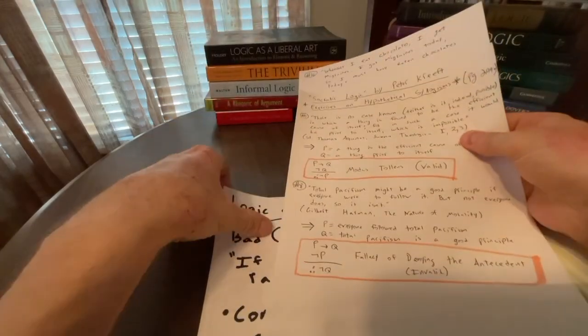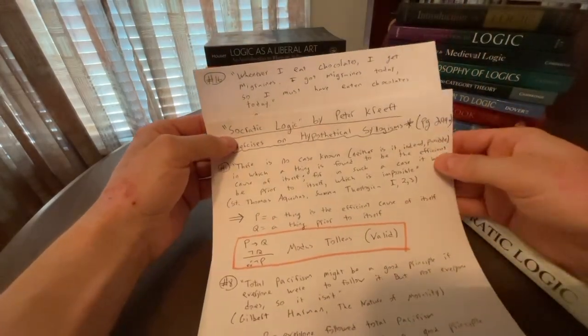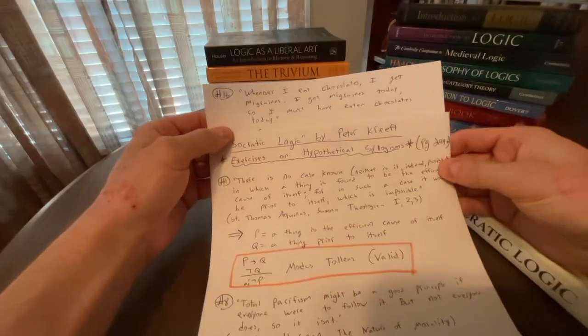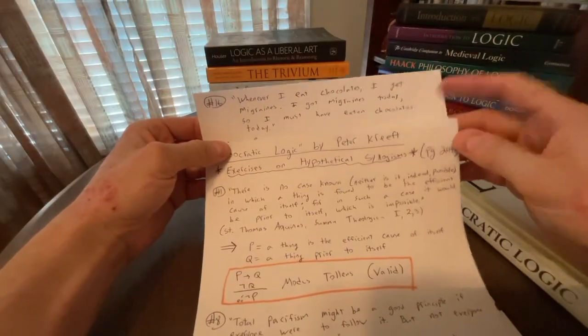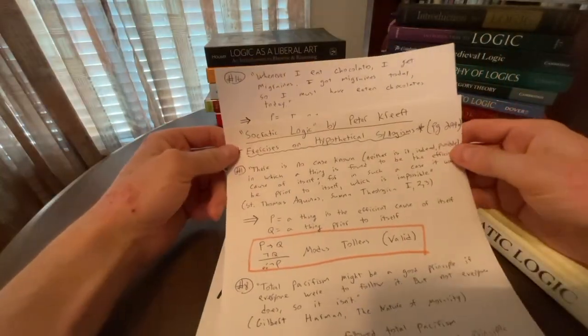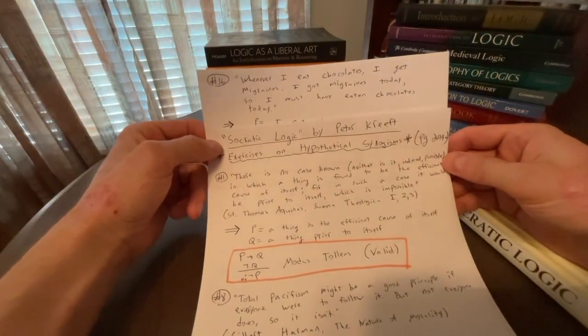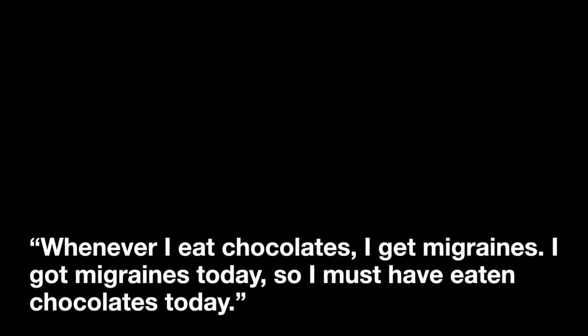And let's try a few more problems here. And they're all from Peter Kreeft's textbook. Let's try this one. So this will be number 16. Whenever I eat chocolate, I get migraines. I got migraines today, so I must have eaten chocolates today. So like before, pause the video. What's P? What's Q? Construct that argument, the pattern of that argument. And think about that pattern.